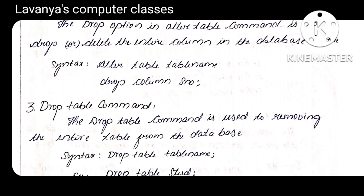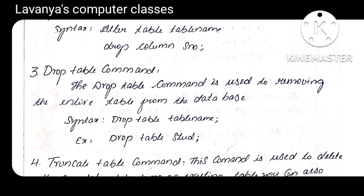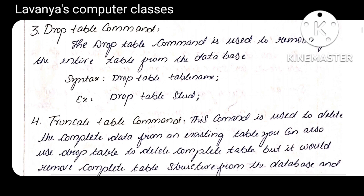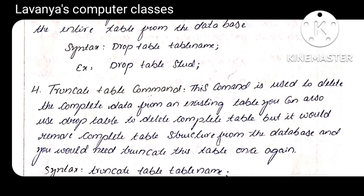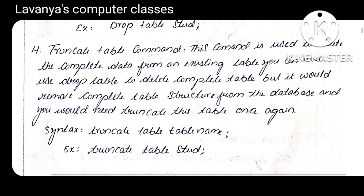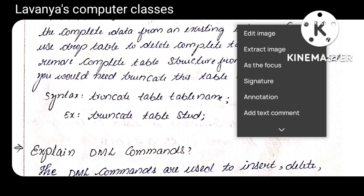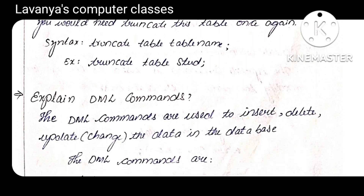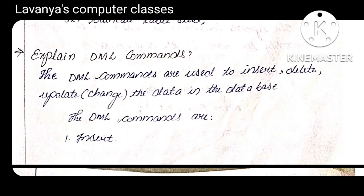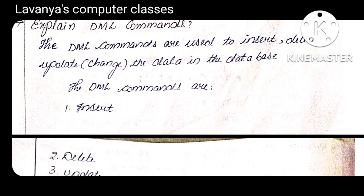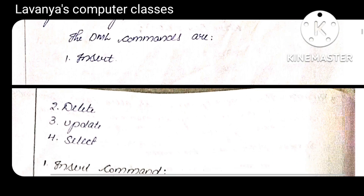Syntax: ALTER TABLE table_name DROP COLUMN column_name. If you want to remove any column, we use ALTER TABLE with the DROP option. Next is the DROP TABLE command, which is used to drop the entire table — removing the data from storage. Syntax: DROP TABLE table_name. The fourth one is TRUNCATE TABLE, also used for removing the table from the database. Syntax: TRUNCATE TABLE table_name. Those are all the DDL commands.